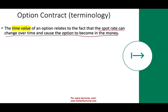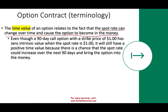As an option gets closer to its end date, the chance of that currency fluctuating significantly is less because you have less time. Even a 90-day call option with a strike of one dollar has zero intrinsic value when the spot rate is one dollar, but it still has a positive time value because you have 90 days for the currency to change. It could go up to $1.50 and you'd be able to buy it for a dollar. The more time you have, the more options you have.